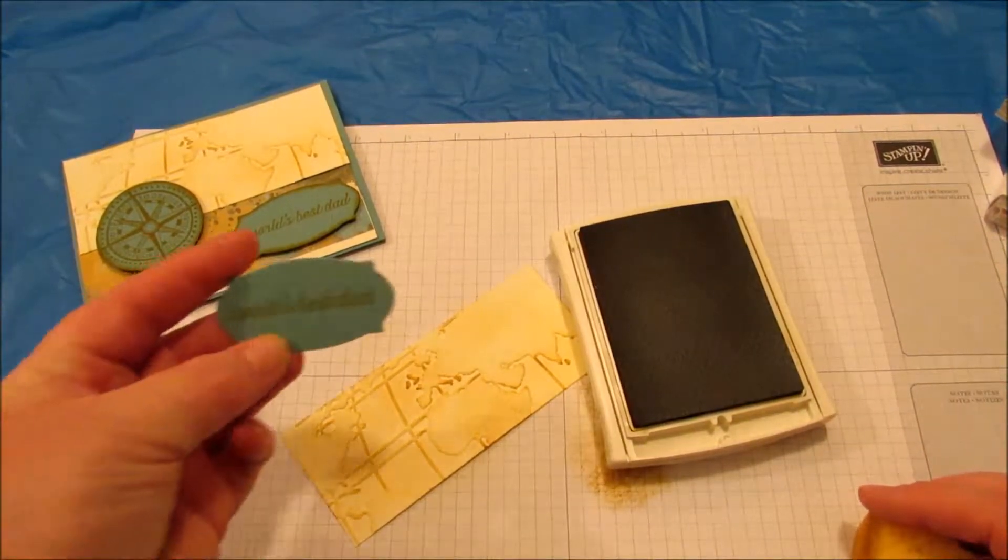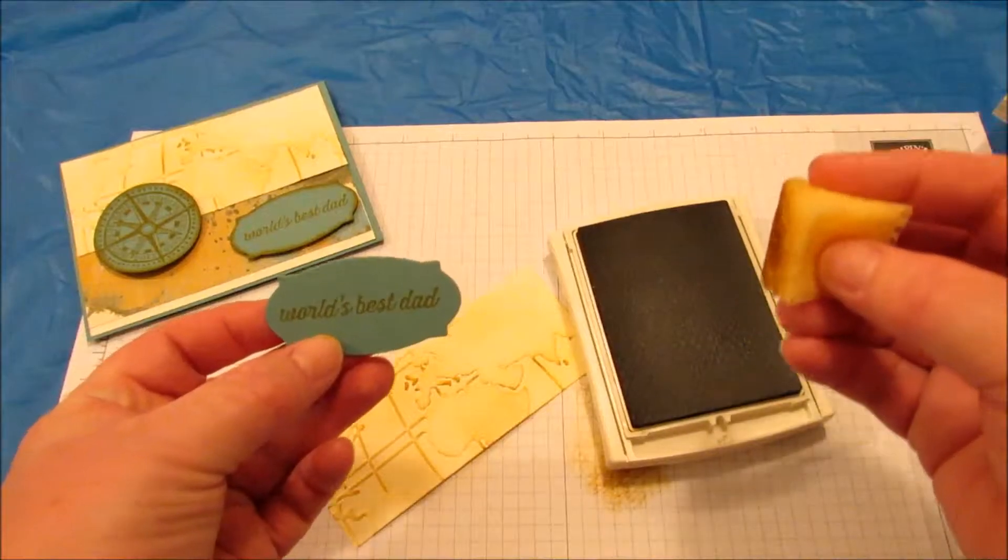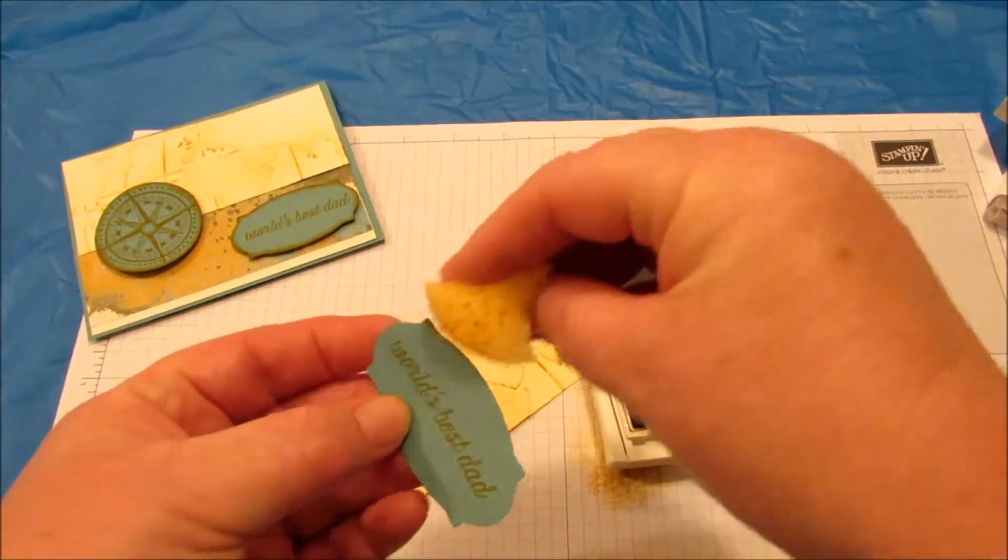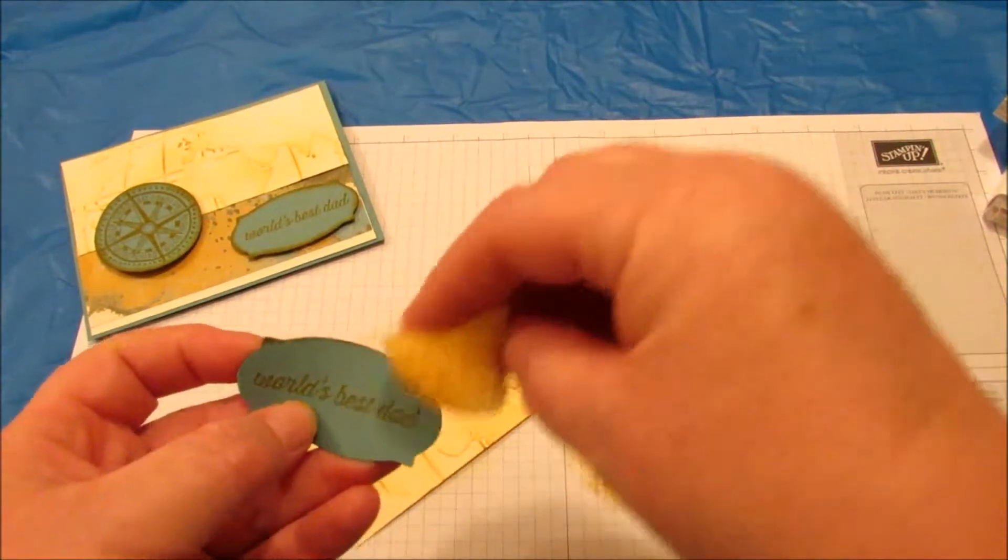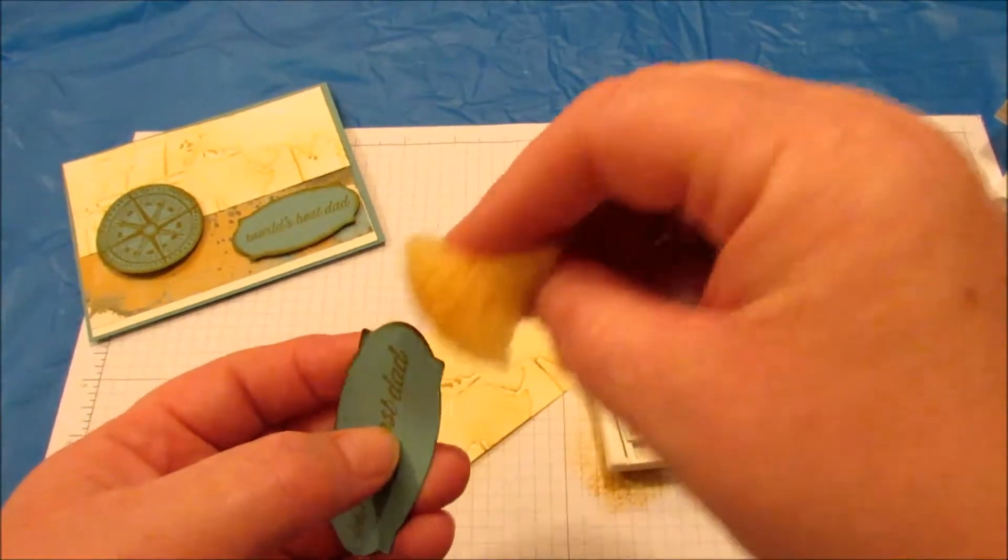I've already done the images in the Delightful Dijon, also on Lost Lagoon paper, but of course, you know me, I want to sponge the edges.